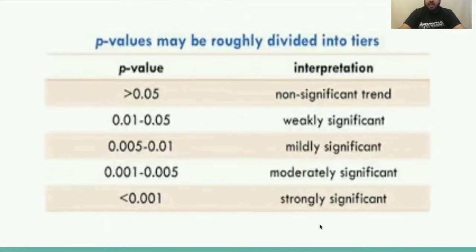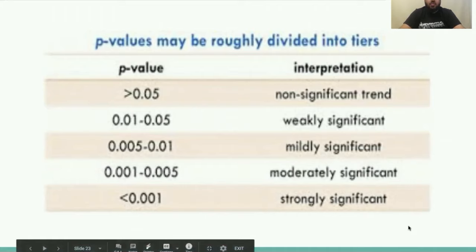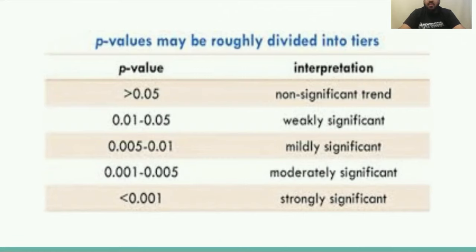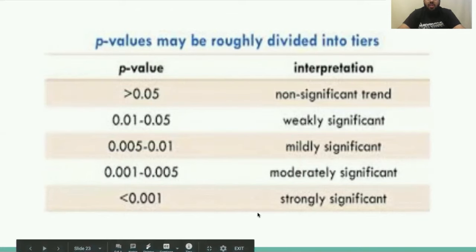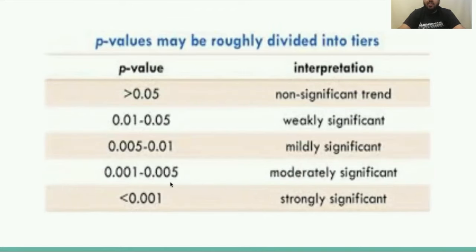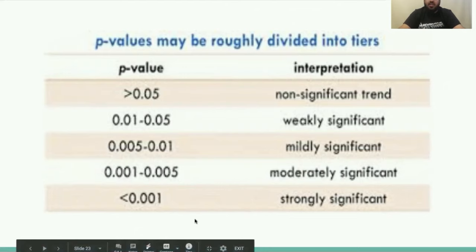Some conventions for interpreting the p-value: a p-value greater than 0.05 is considered non-significant. When it gets below 0.05 — essentially 5% — it becomes increasingly more significant. When we get down to something like 0.001 to 0.005, the result starts becoming moderately to strongly significant.